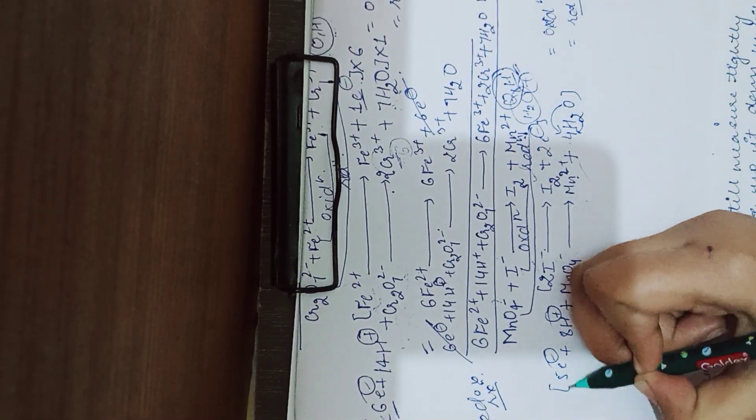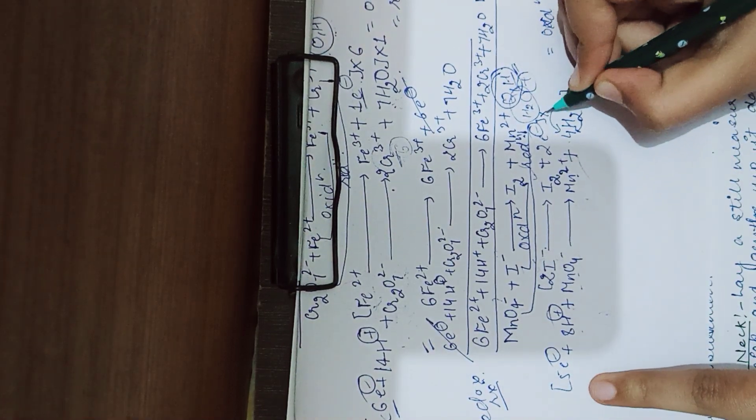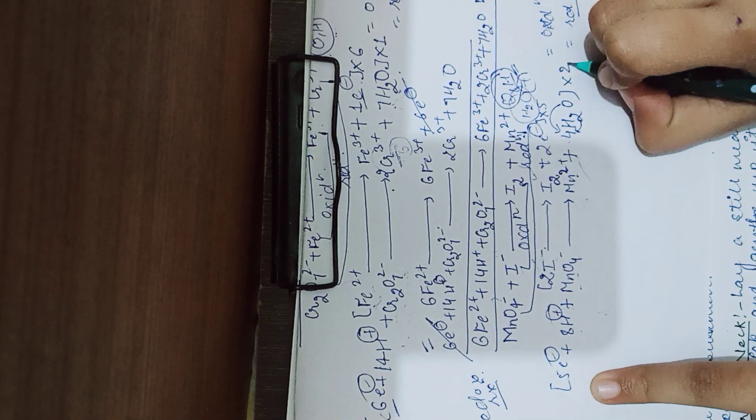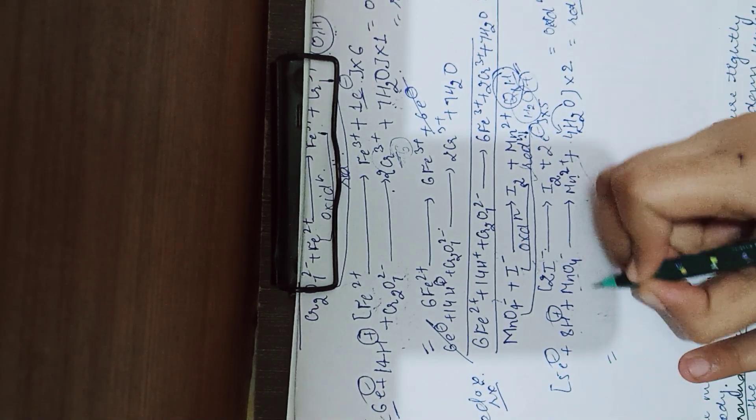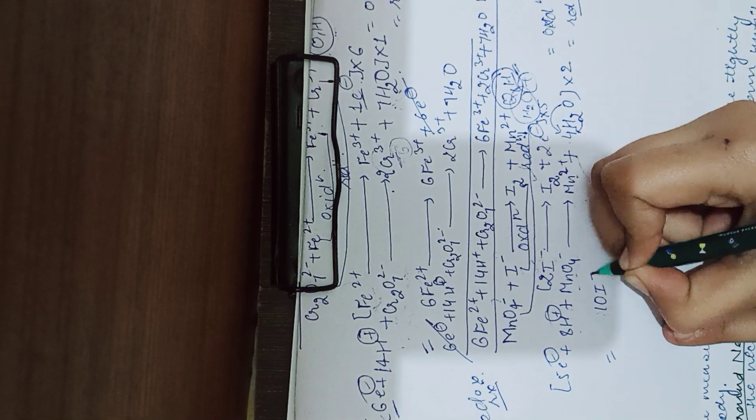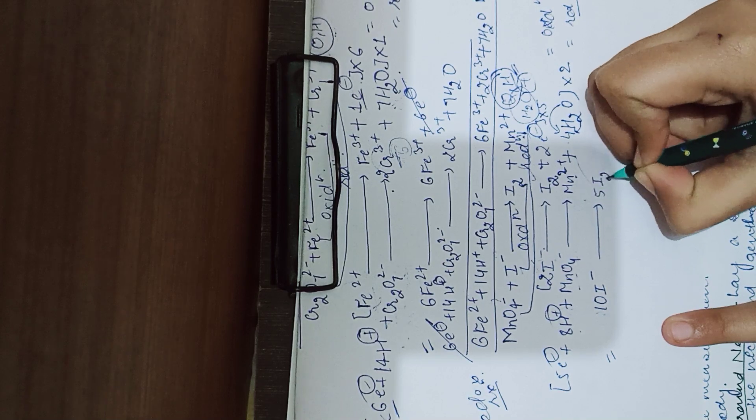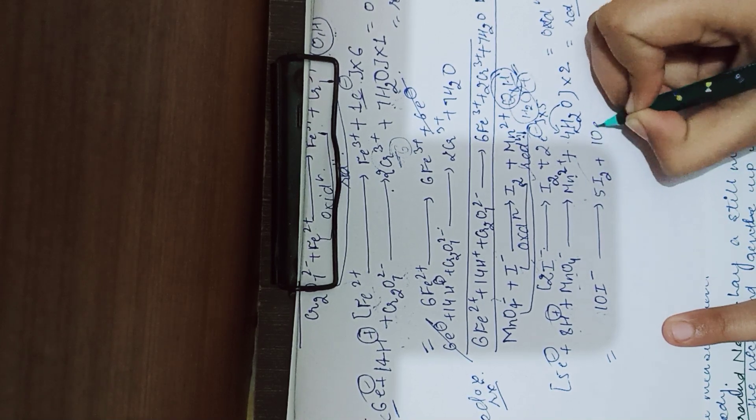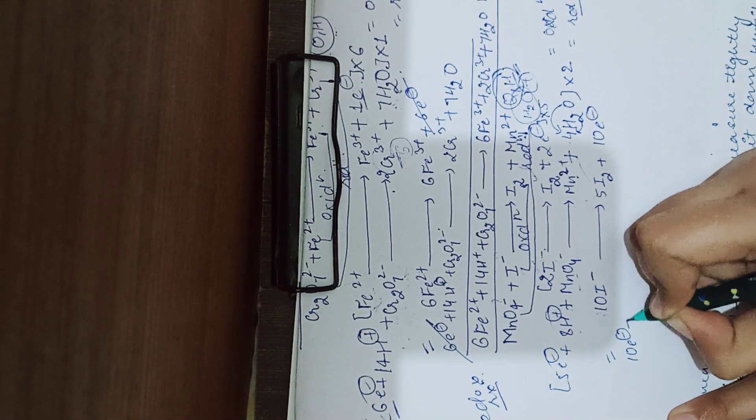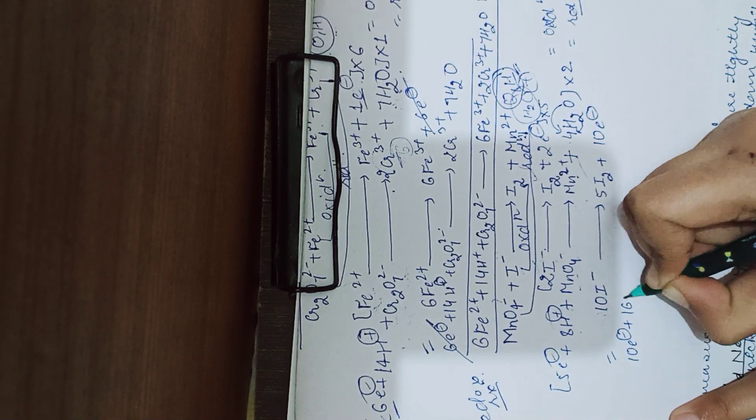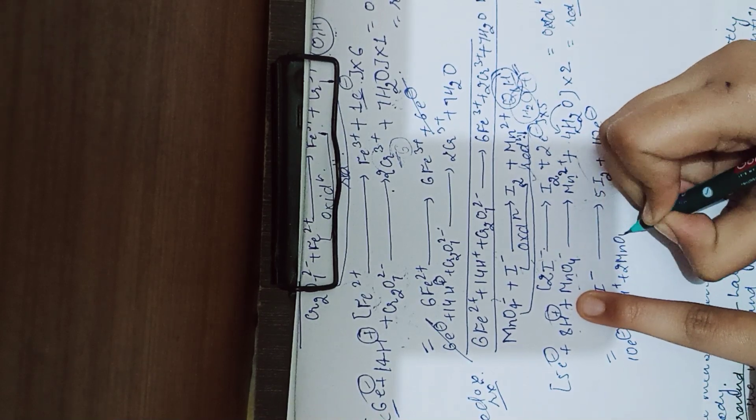Now what we will do is cross multiply by electrons. So we add 5, multiply the oxidation by 5. We add 2, multiply the reduction by 2. Now the final reaction: 10 I negative gives you 5 I2 plus 10 electrons, plus 16 H positive plus 2 MnO4 negative gives you 2 Mn2 plus.